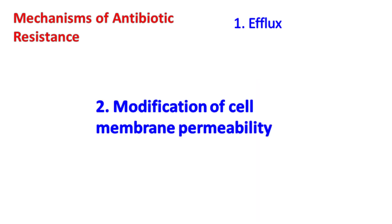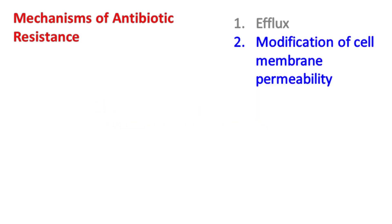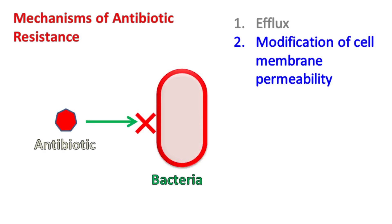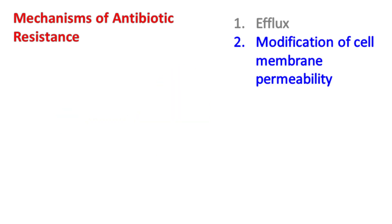Modification of membrane permeability: in this mechanism, the bacteria modifies its membrane such that the antibiotic cannot enter the cell.